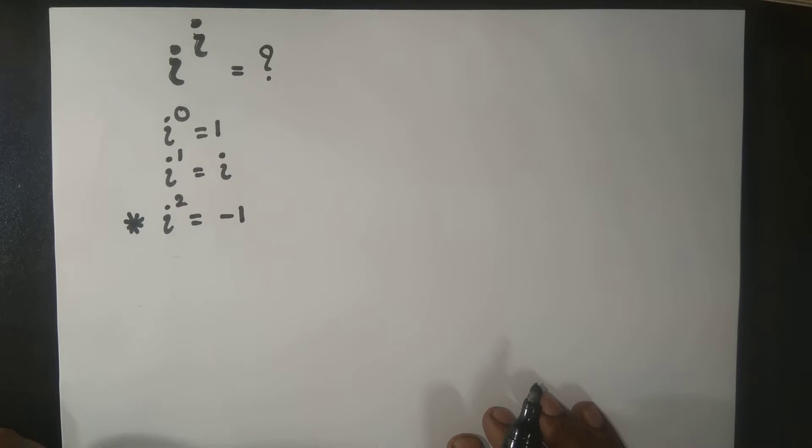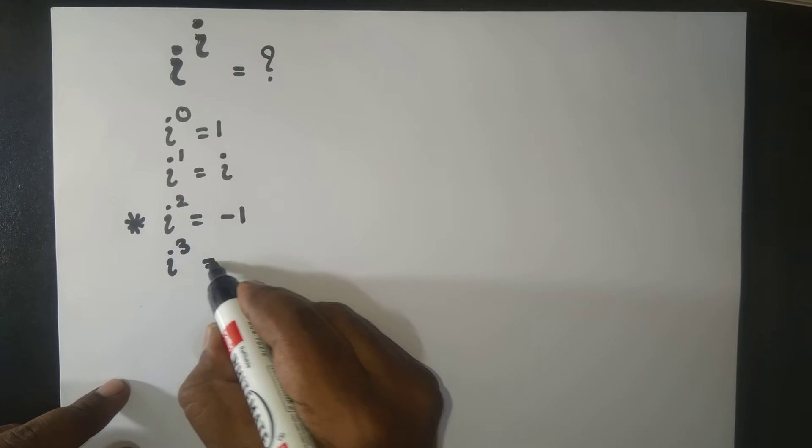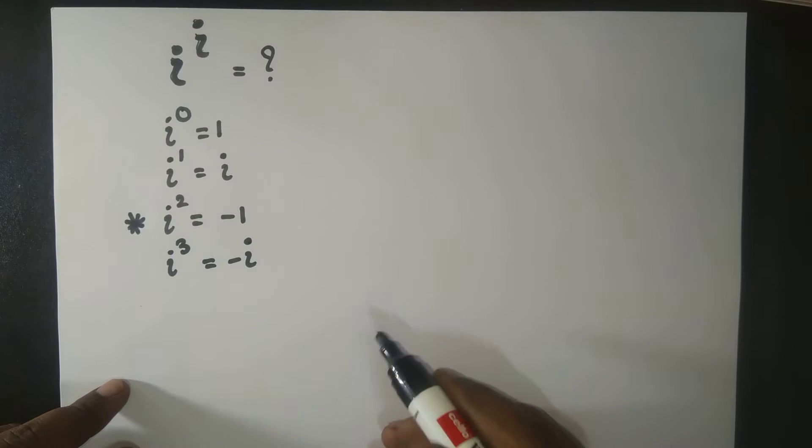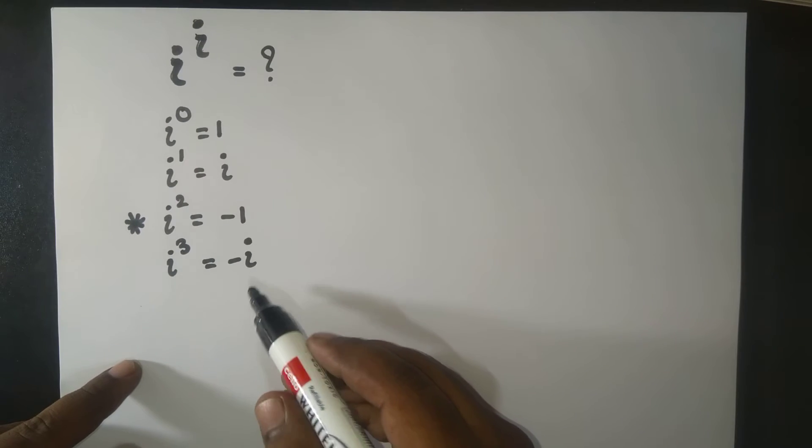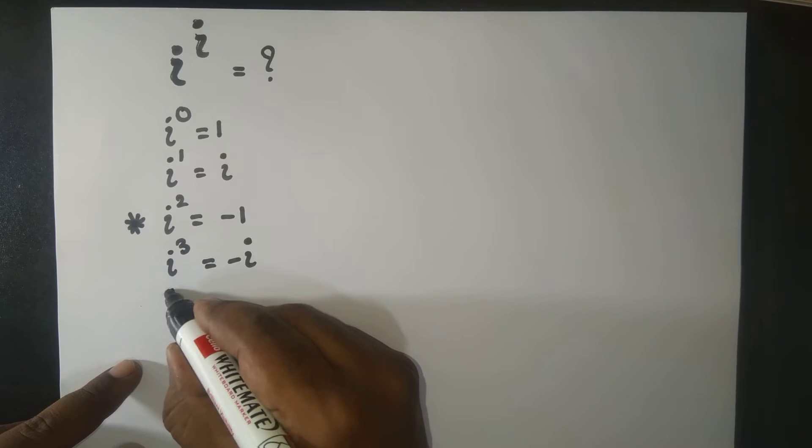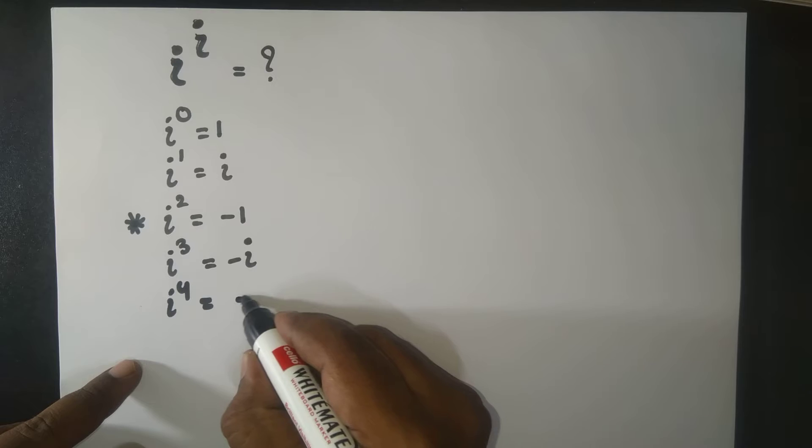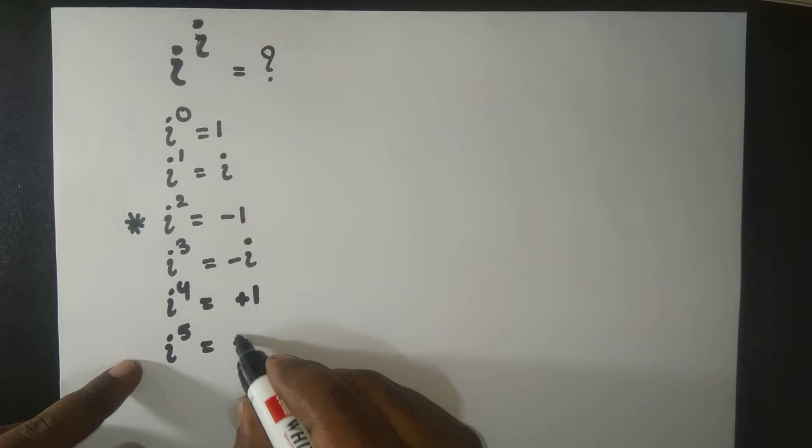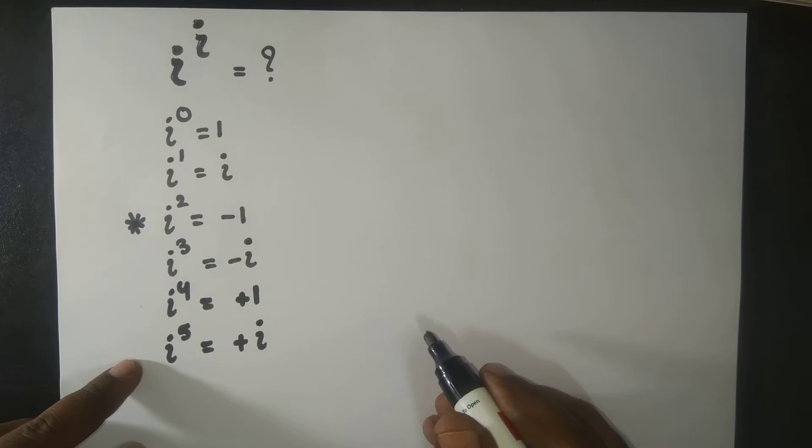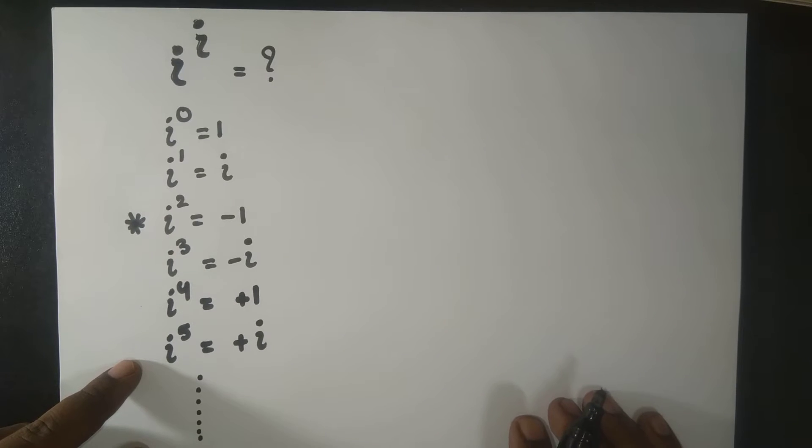i^2 is negative 1, and i^3 is negative i. That's i^2 times i, which is minus 1 times i, which is negative i. And i^4 is positive 1, and i^5 is positive i, and so on. We can keep going like this. But what is i^i?